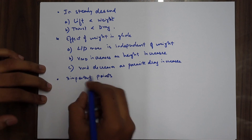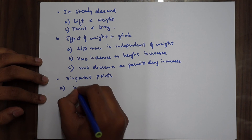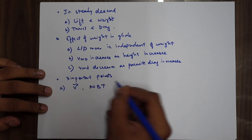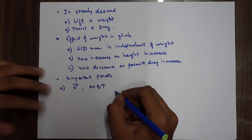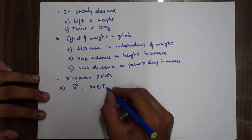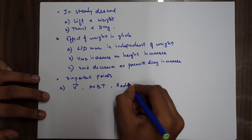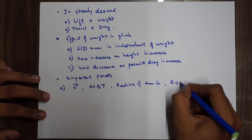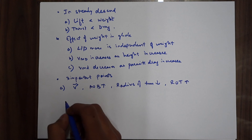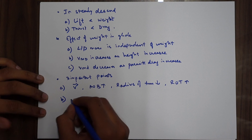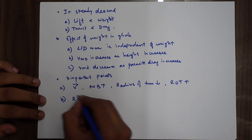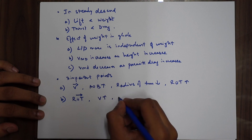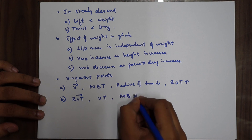From the turning formula: at constant speed, if angle of bank is increased, radius of turn decreases and rate of turn increases — just look at the formula. If you want to maintain constant rate of turn and speed is increased, then angle of bank has to be increased. At constant angle of bank, if you increase speed, then radius of turn increases and rate of turn decreases.